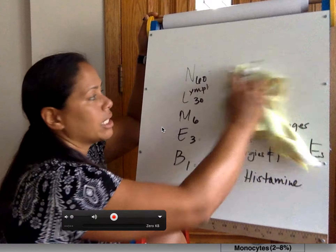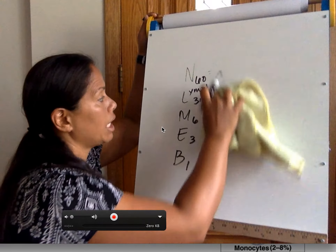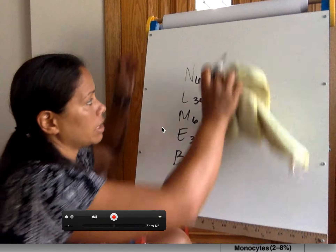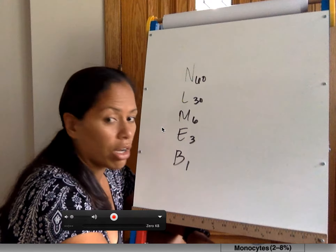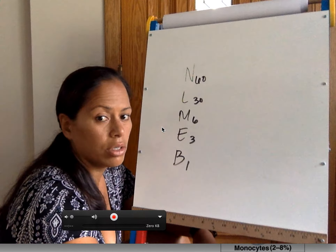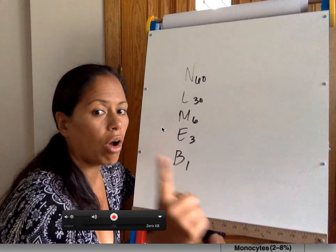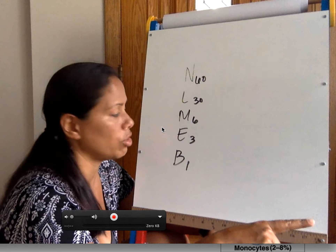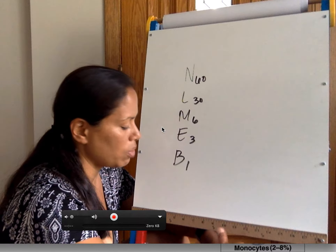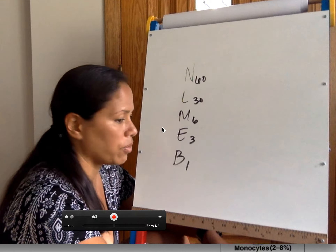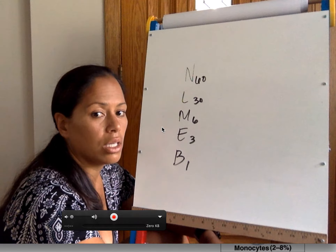Let's erase this and test you quickly. Never let monkeys eat bananas — 60, 30, 6, 3, 1. Neutrophils are the most abundant white blood cell. Red blood cells are the most abundant cell overall. Neutrophils release cytokines causing chemotaxis. Macrophages are the big eaters originating from monocytes. Eosinophils are associated with allergies and parasites. Basophils, similar to mast cells, release histamine. B cells, T cells, and natural killer cells are lymphocytes.